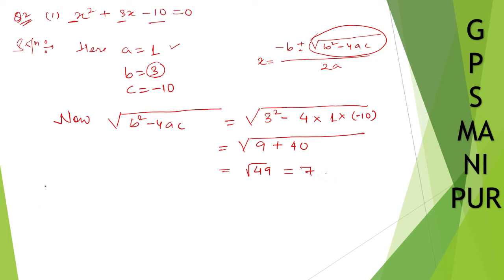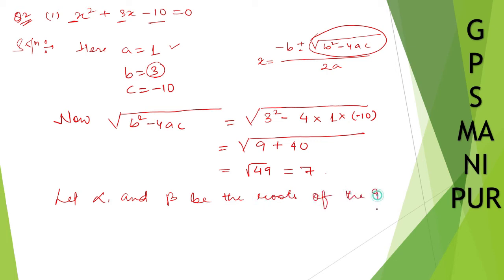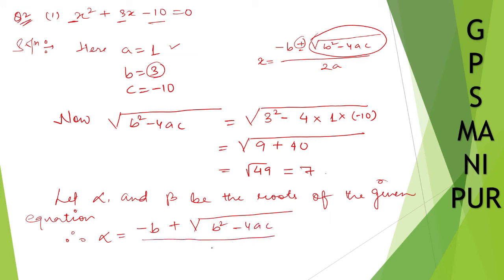Let alpha and beta be the roots of the given equation. Therefore alpha will be equal to minus b plus root over b squared minus 4ac, divided by 2a. That is minus 3 plus 7, divided by 2 into 1, which is 2. So 7 minus 3 equals 4, divided by 2, which equals 2.